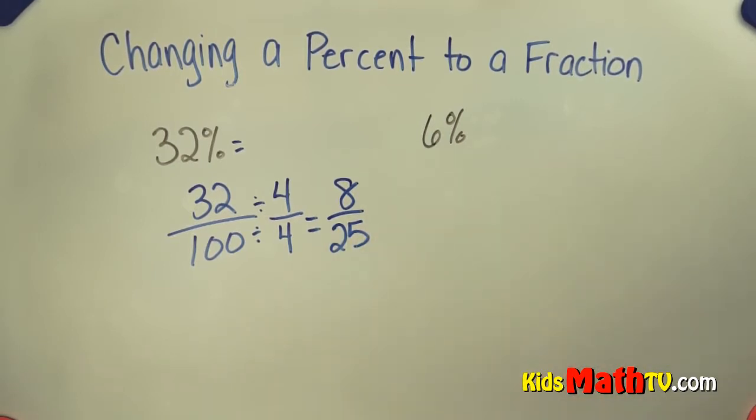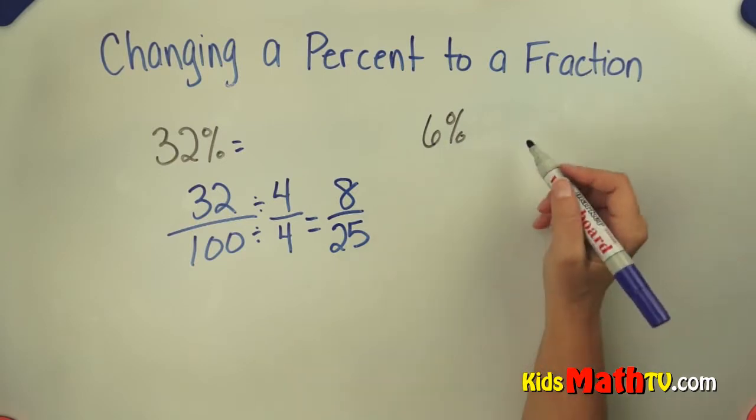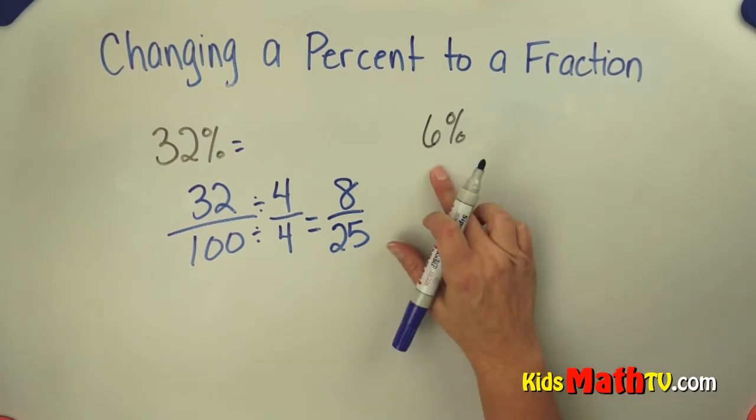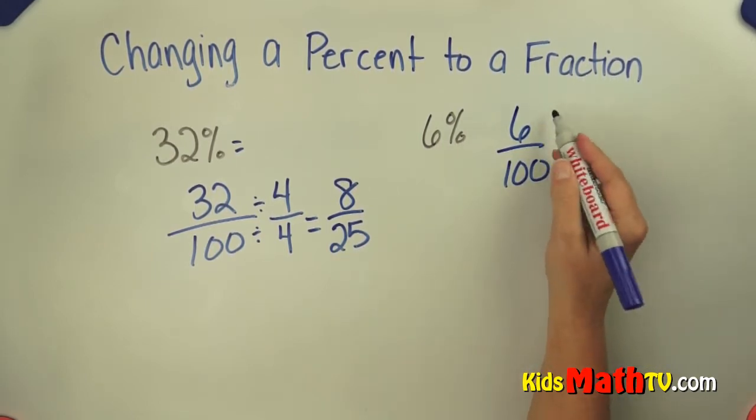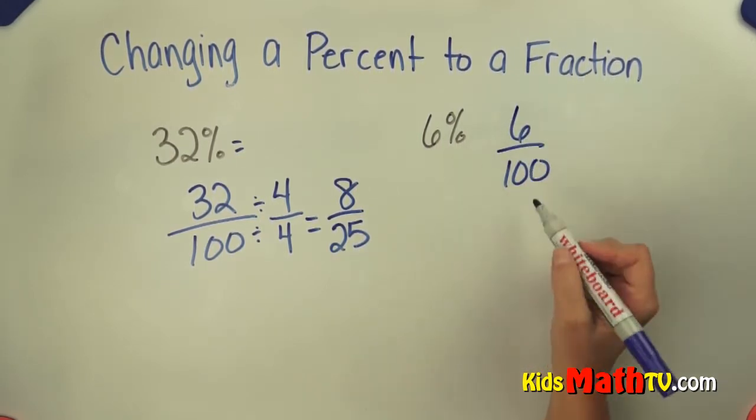Let's try another one. 6%. 6% is a little bit tricky. Well, it's not that tricky. It's just 6 per 100. It's not 60, it's just 6 per 100.